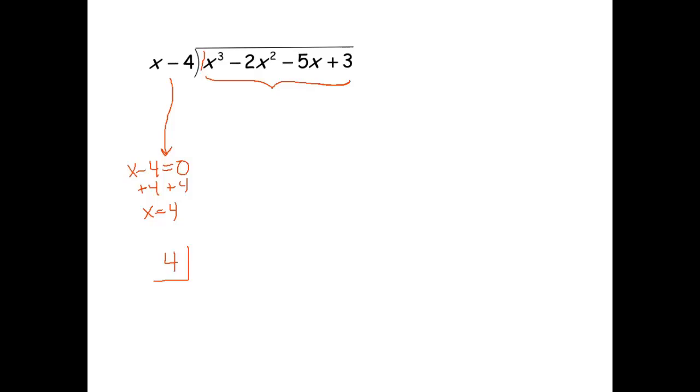Now notice that we have an x cubed, an x squared, an x and a constant. There are no terms missing in between there. That's good. If it does happen to be missing terms, we want to use a 0 to represent its coefficient, but we're good with that.